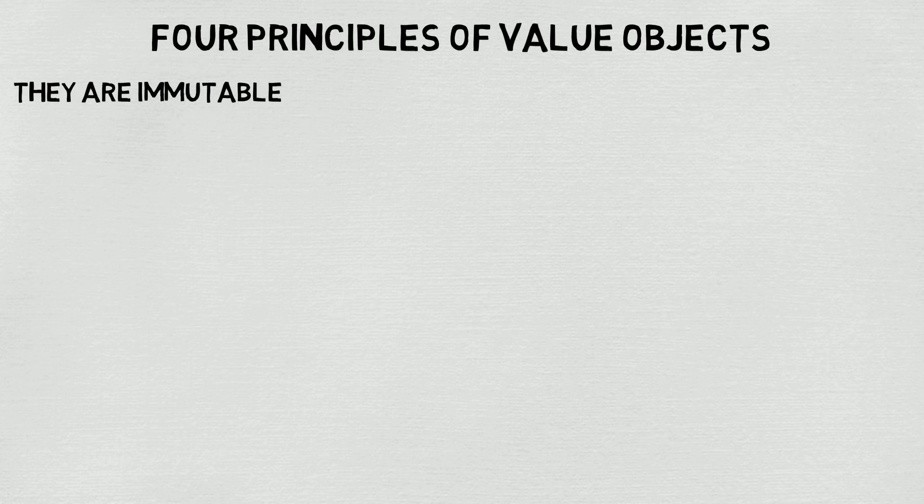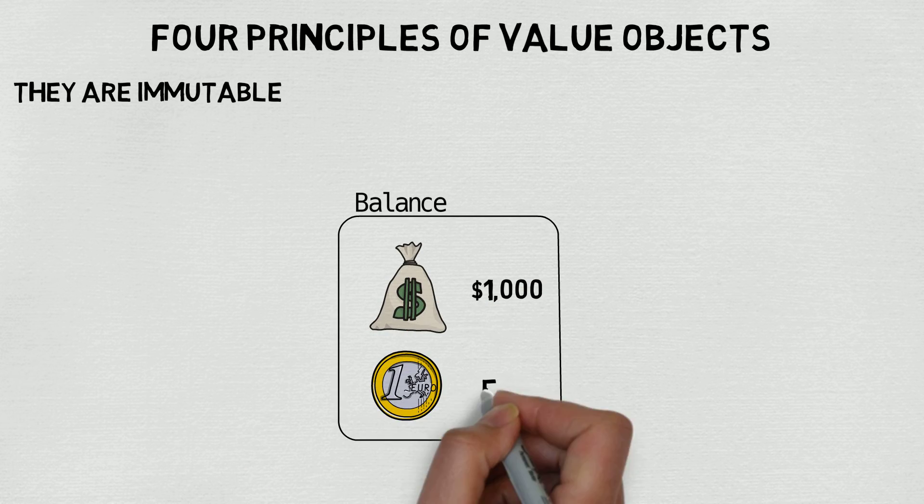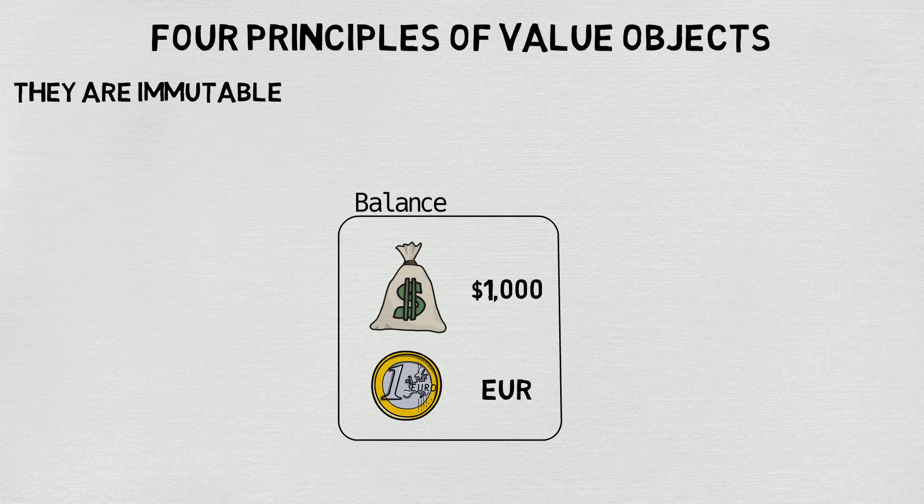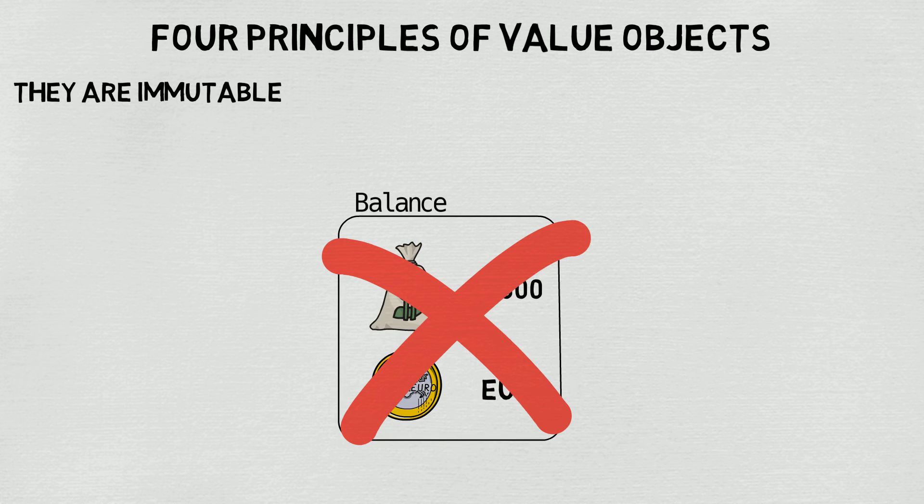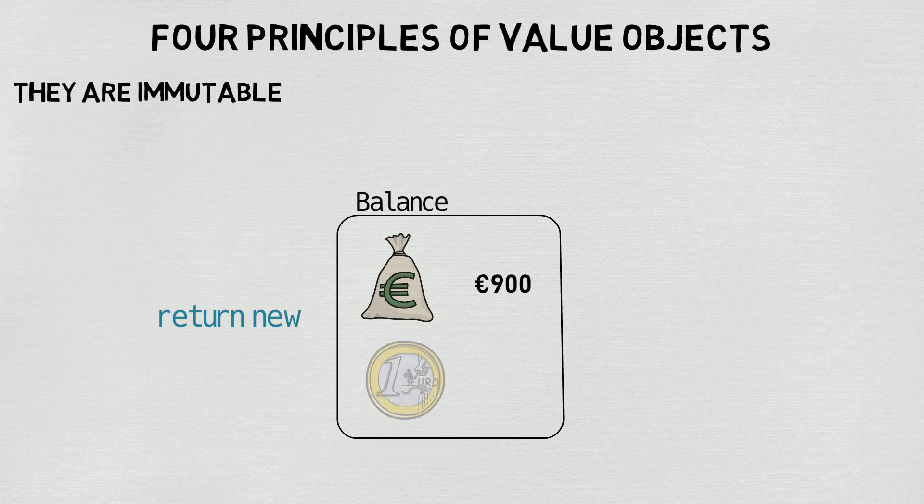The second principle is they are immutable. Remember to think about the example of changing only the currency value of our bank accounts. You can't go from a thousand US dollars to a thousand euros. That just doesn't make sense. Each currency is valued differently. So when you need to make a change to a value object, remember to always destroy and recreate the entire object.